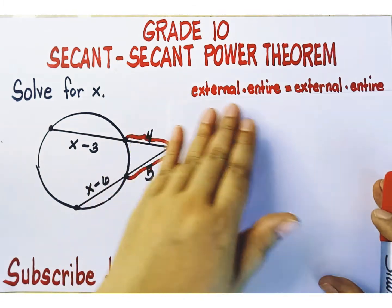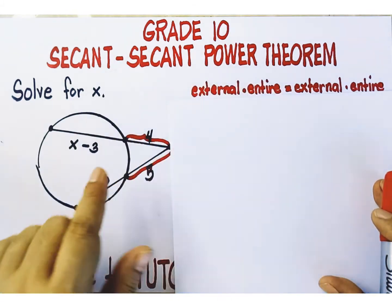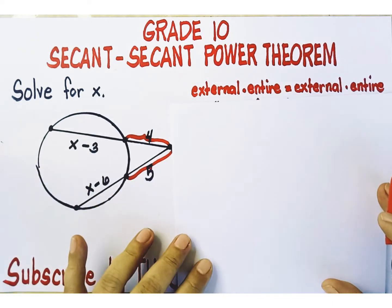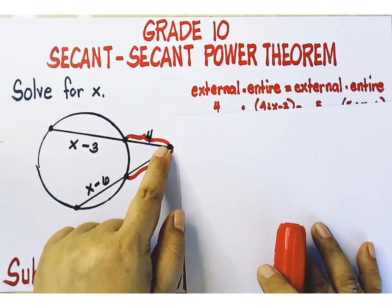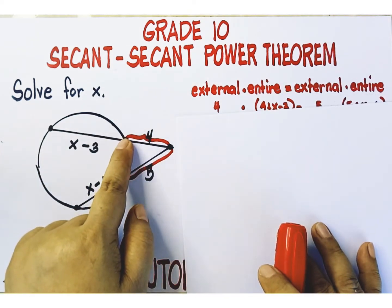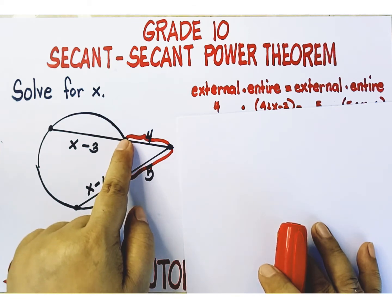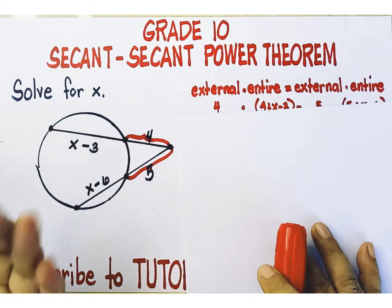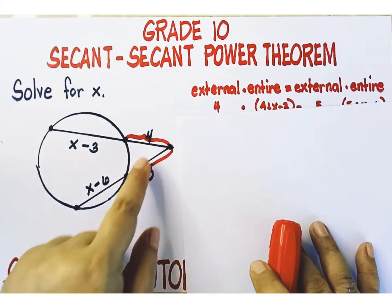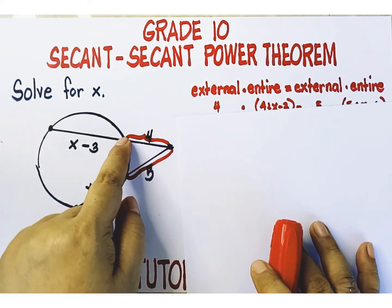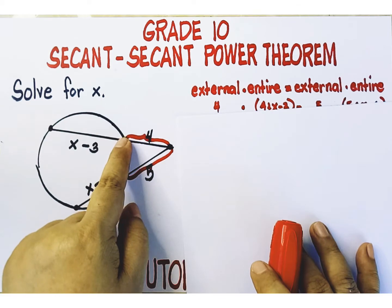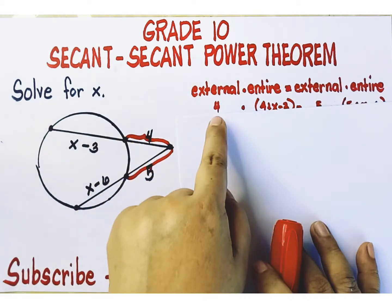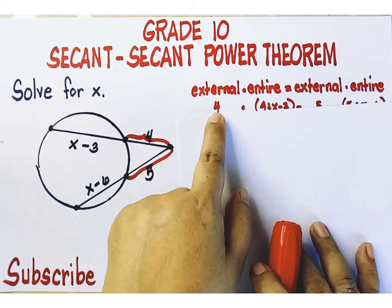Let's focus on the left side of the equation and on the first secant segment in the figure. The external portion of the secant segment is the portion that lies outside the circle, because external means outside. Its length is given and it's equal to four units, so you replace this word with its value — it's equal to four.